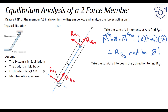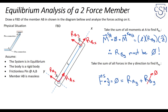We can also take the vector sum of all forces in the Y direction. Dotting with Y-hat gives RAY plus RBY equals zero. Since we just determined RBY is zero, RAY must also be zero.